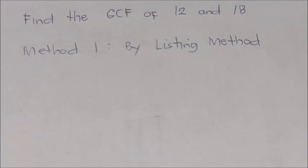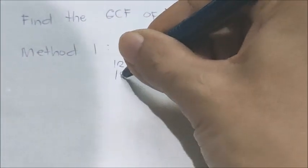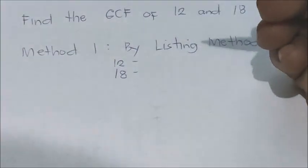Find the GCF of 12 and 18. Method 1: Listing Method. We're going to find the factors of 12 and 18.